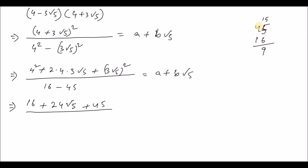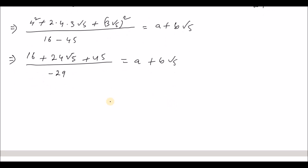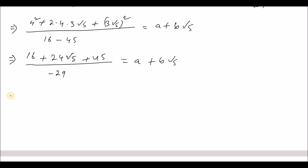So the numerator is 45 plus 16 plus 24 root over 5, all divided by minus 29. This simplifies to 61 plus 24 root over 5 divided by minus 29, giving us a plus b root over 5.